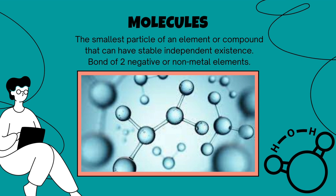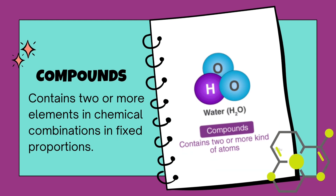A molecule is the smallest particle of an element or compound that can have a stable, independent existence. Recall that there are seven elements that are diatomic in nature — this is because they are not stable with only one atom. For example, individual oxygen atoms are not stable at room temperature and atmospheric pressure.